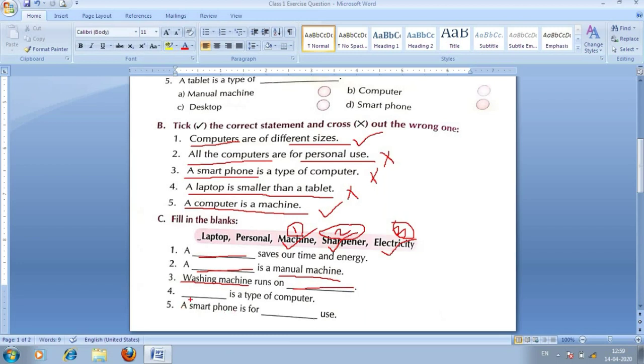Four number, that is a type of computer. Yaani ke, ek prakar ka computer hai. Toh, kya? Toh, laptop hojaye ga. Four number mein kya hojaye ga babu, hamara? Four number mein laptop hojaye ga. Laptop jo hai, ek prakar ka computer hai. Aap, yahaan pe fill kar dhenge. Laptop.